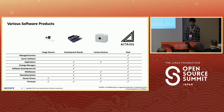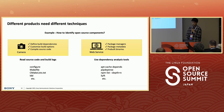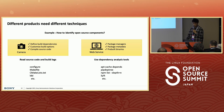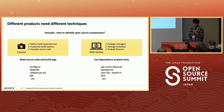Our various software products make our open source compliance very complicated. For example, dependency analysis — how to identify open source components. When we make camera devices, we define build dependencies and customize build options, then compile source code to generate binaries. We need to read source code and build logs like configure scripts, makefiles, CMakeLists.txt, or running linker commands to analyze dependencies. When we make web services, we use package managers and refer to package metadata and use pre-built binaries. We should use dependency analysis tools like apt-cache-depends, pip-dep-tree, npm-list, or similar. Different products need different techniques.